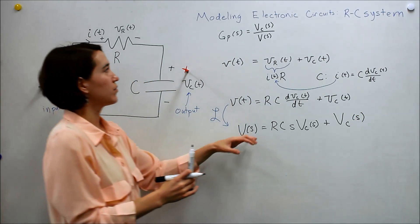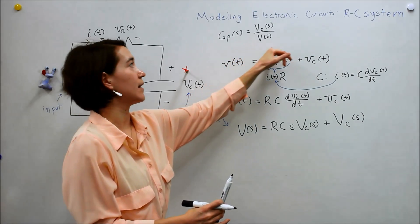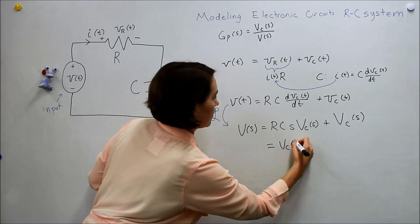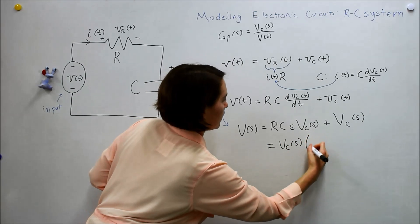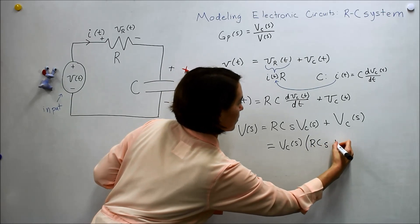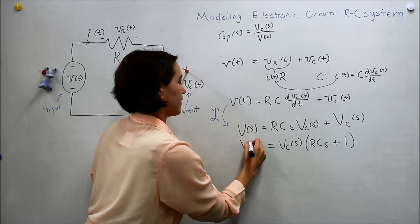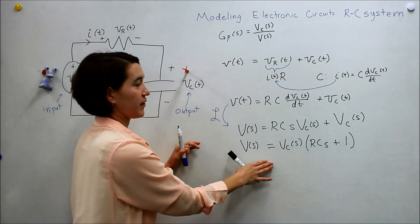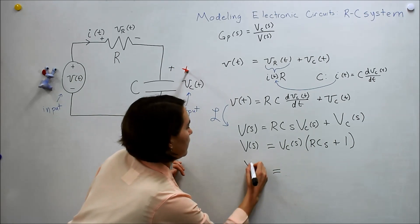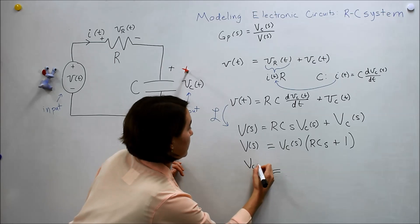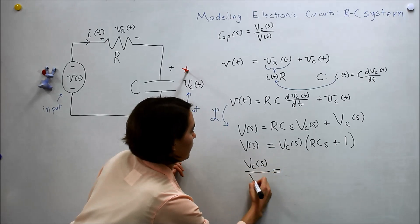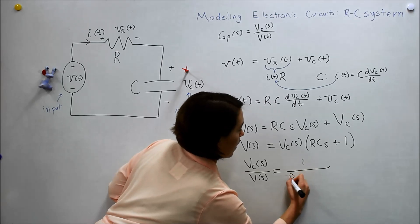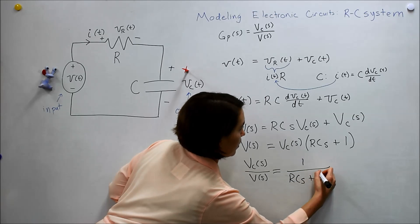So now we want to rearrange this equation so that it looks like this. So let's take out vc on both sides of this. And we get r c s plus 1. And here we have v s still. So if we move things around and move this to the bottom here and move this to the denominator here, we should get vc of s over v s equals 1 over this value, r c s plus 1.